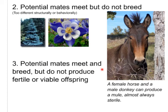Third: potential mates meet and breed, but they do not produce fertile or viable offspring. One example of that would be a mule. A female horse and a male donkey can produce a mule, but it is almost always sterile. So in that case, we do not consider that offspring a new species.